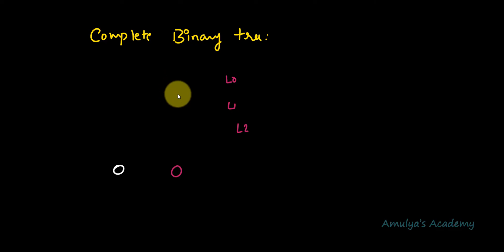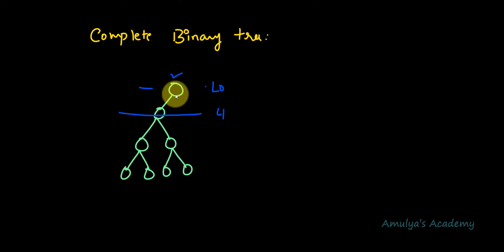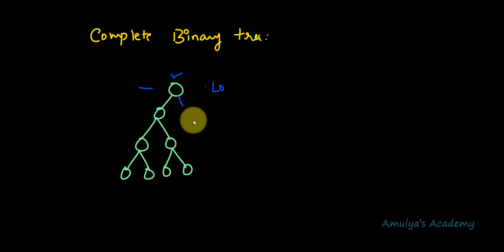Let's take another example. Level 0 is completed since the root node is present. Moving to level 1: this node can have at most 2 children but one child node is missing — level 1 is not completed. Since level 1 is not the last level, there is no flexibility. All levels except the last must be completely filled, so this is not a complete binary tree.